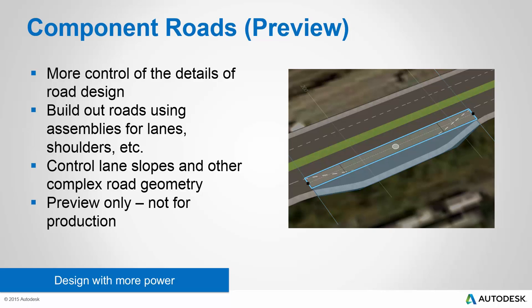Component Roads is a feature you'll see as a preview in this summer 2015 update of InfraWorks 360. This feature set gives you more control over the details of your road design by allowing you to build out your roads using assemblies for things like lanes, shoulders, and other items. It allows you to control lane slopes and other complex road geometry. Again, a reminder that this is a preview only — it's not for production. It's something we're working on, with no guarantee that it will become a supported feature in future releases, but we would love for you to try it out and give us feedback.